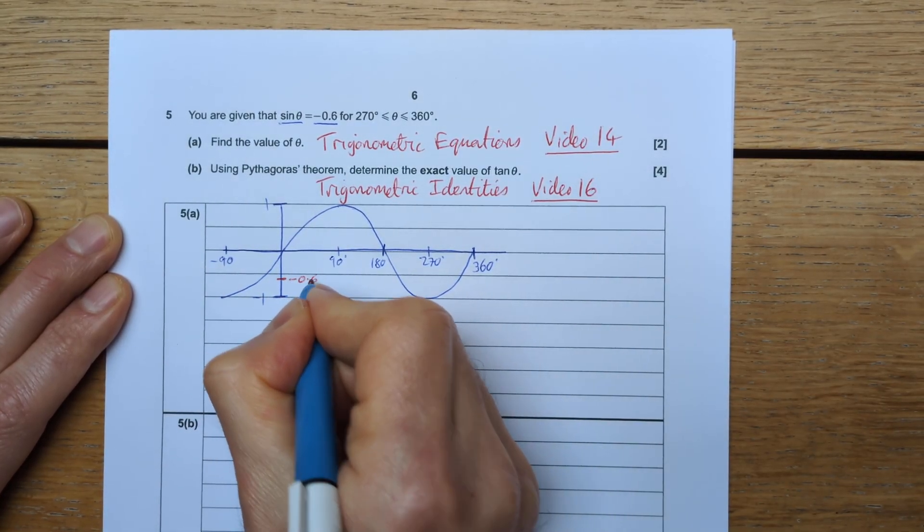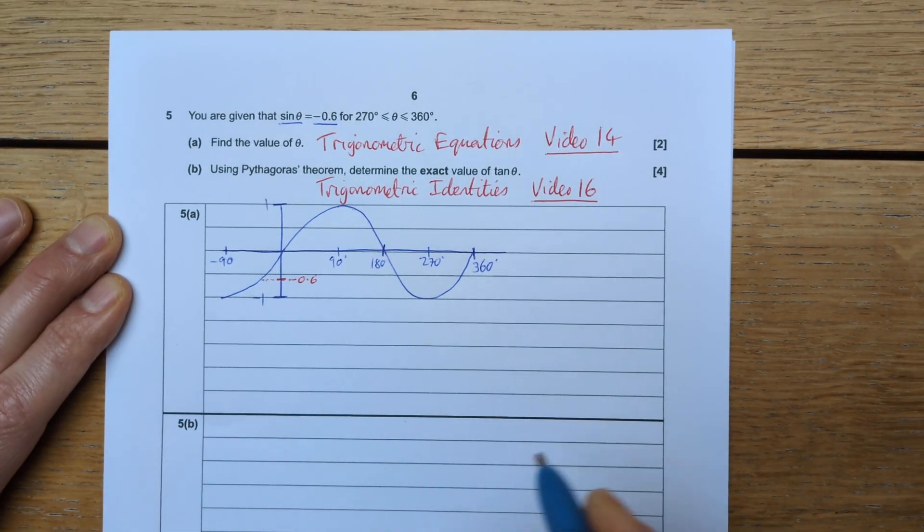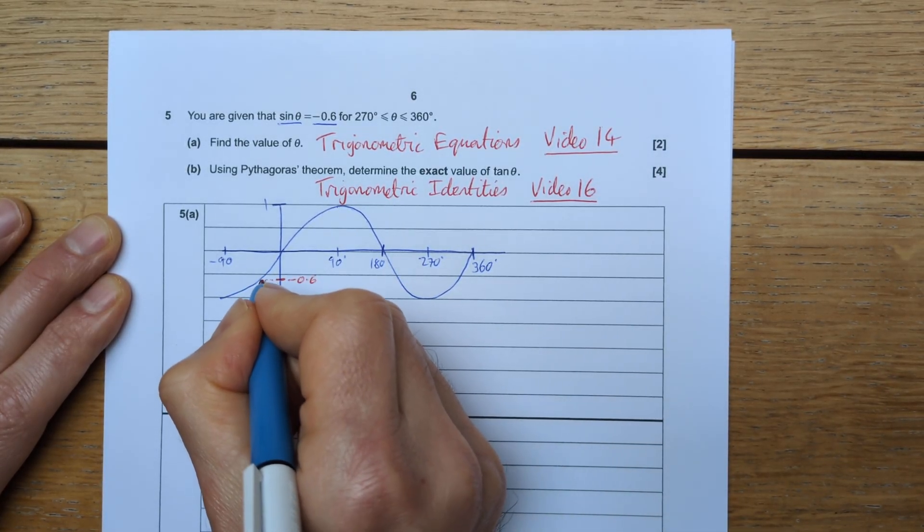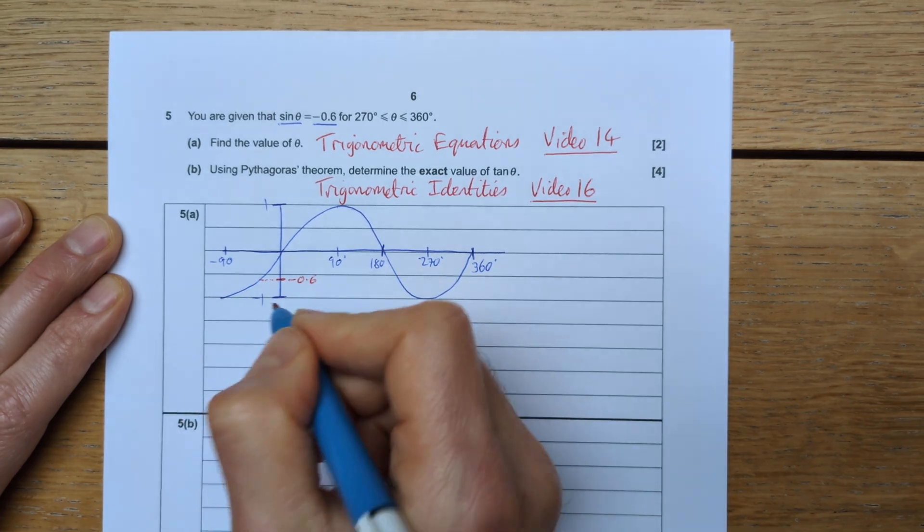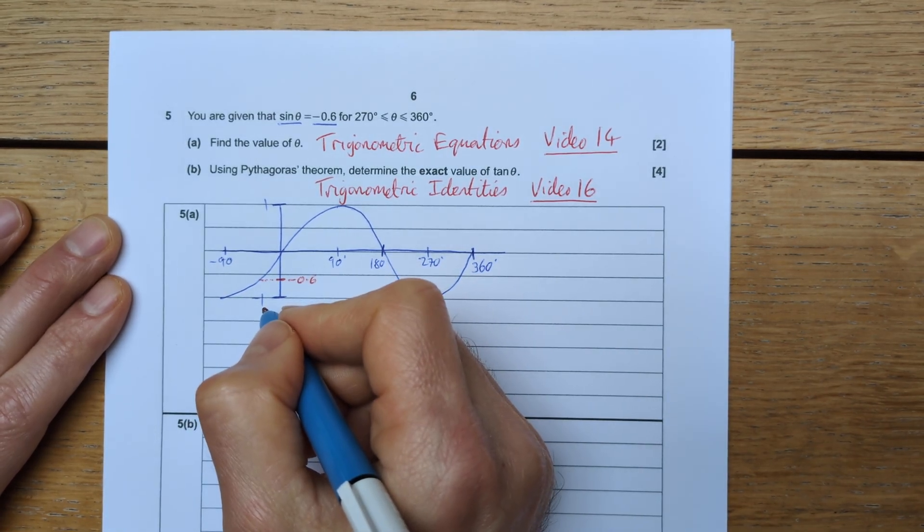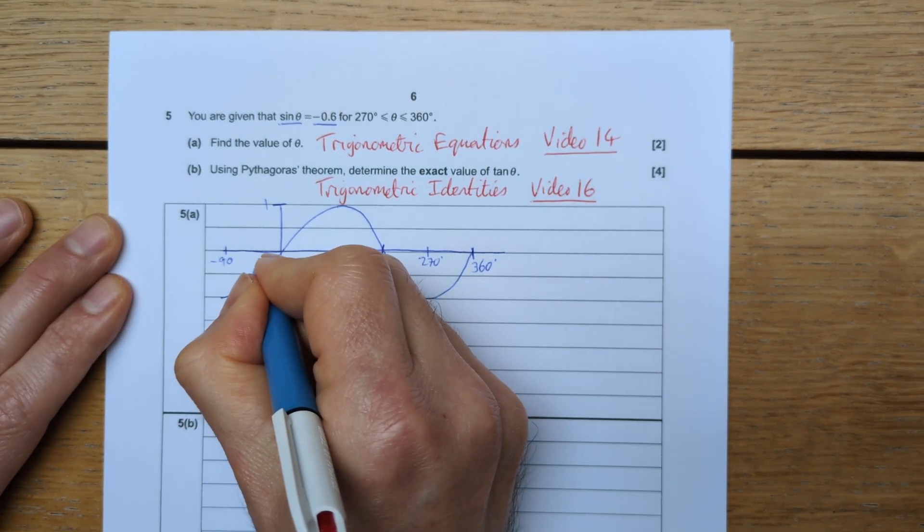So we need to find out when the sine curve has a value of negative 0.6, which is about there. The closest value to the y-axis, the smallest x value, the closest to 0, is this value here.